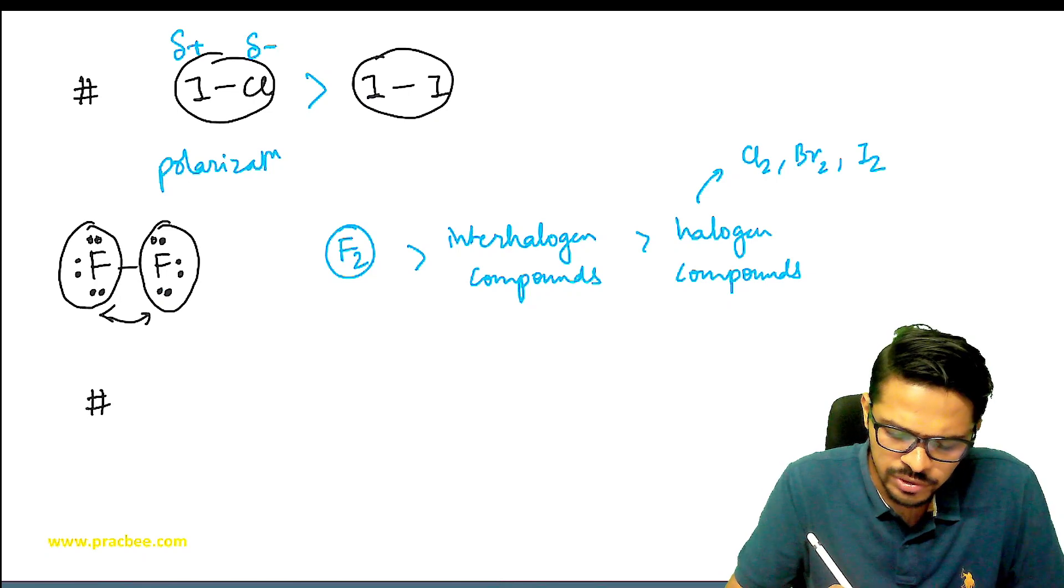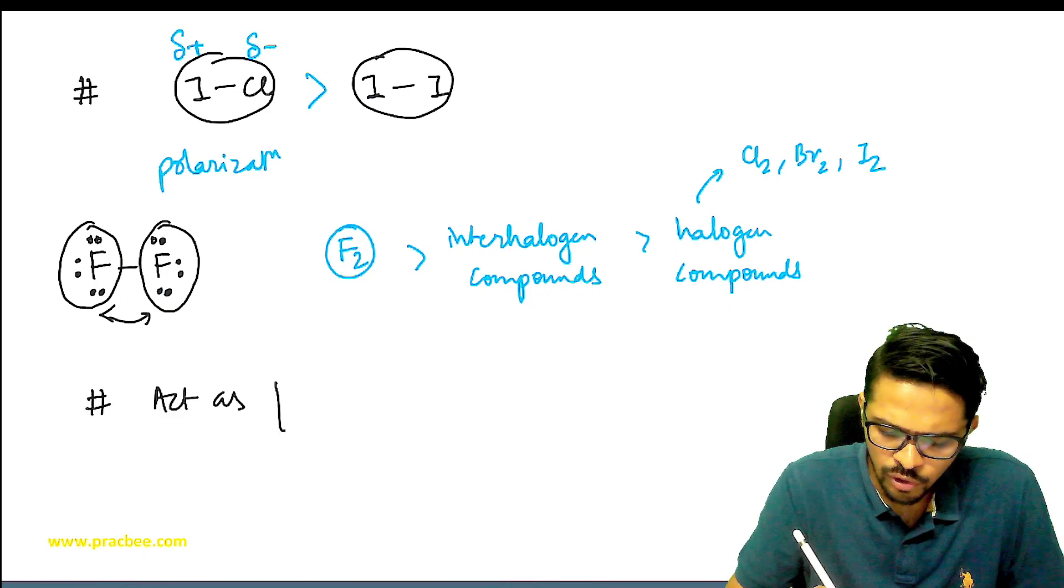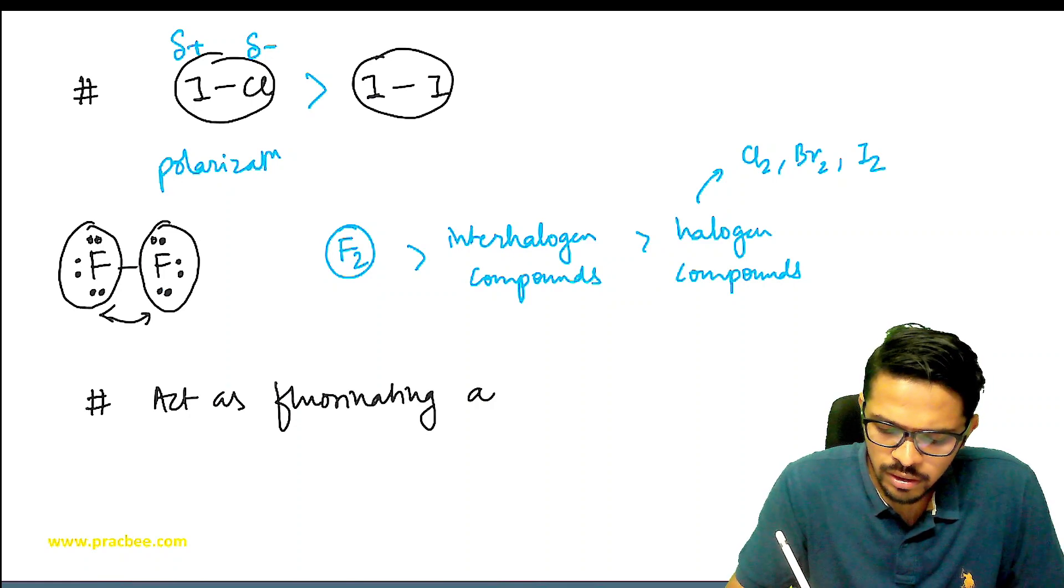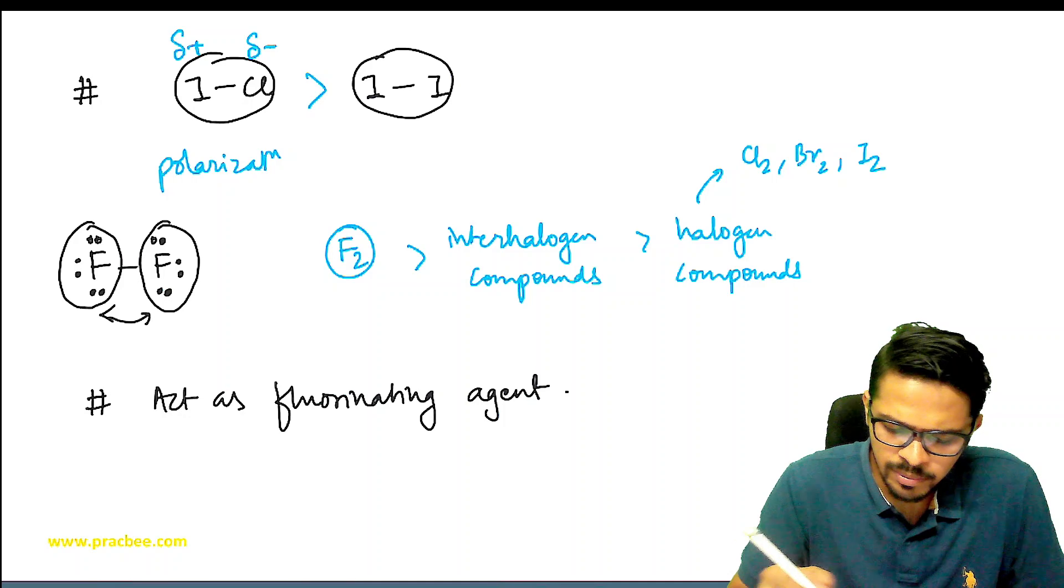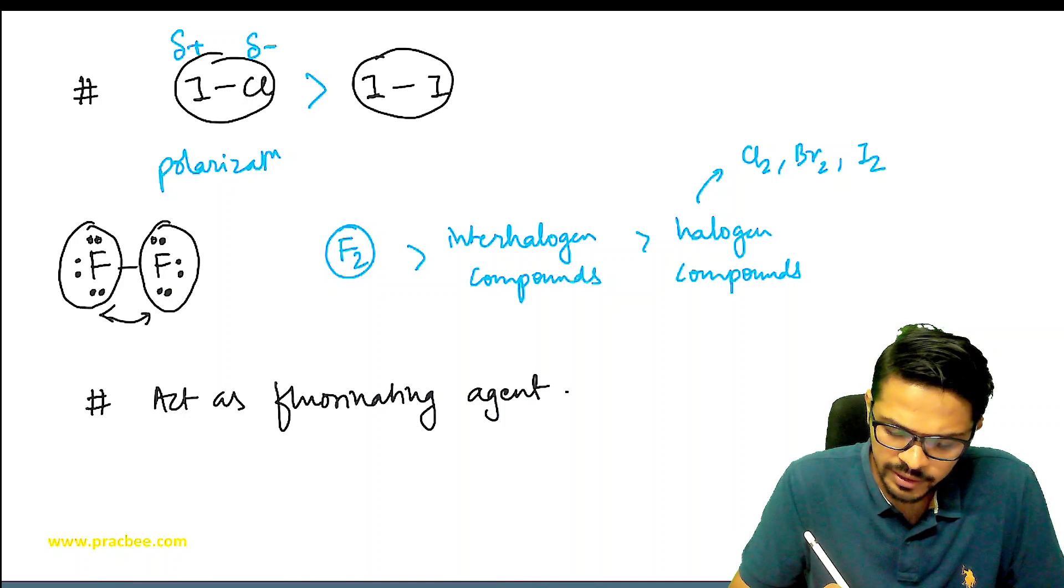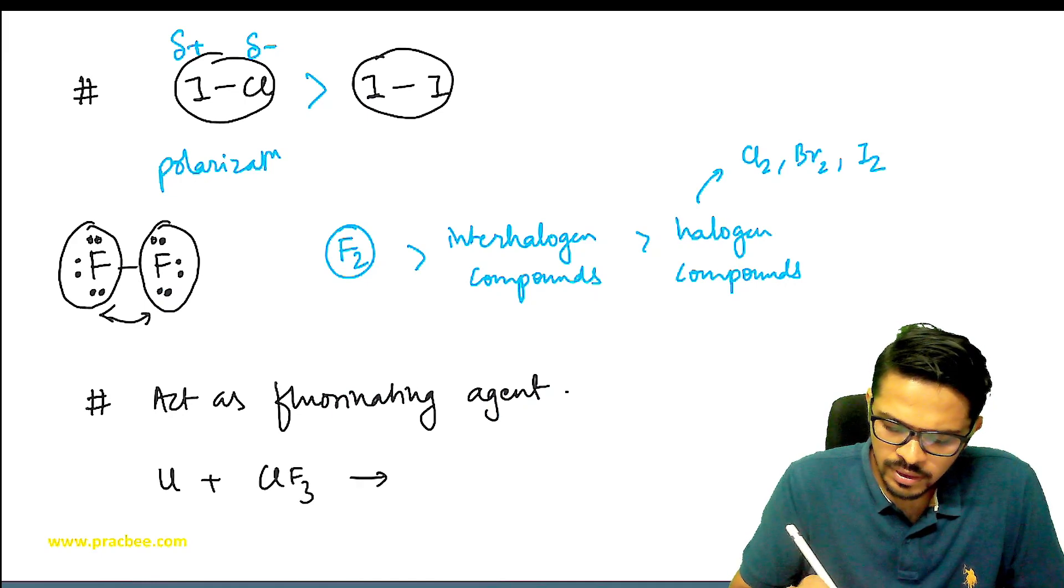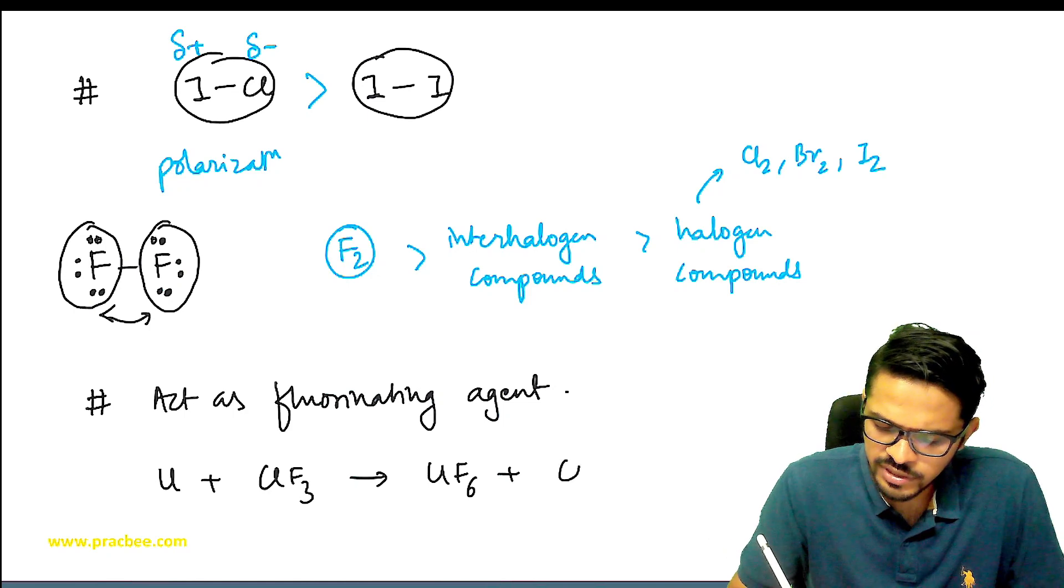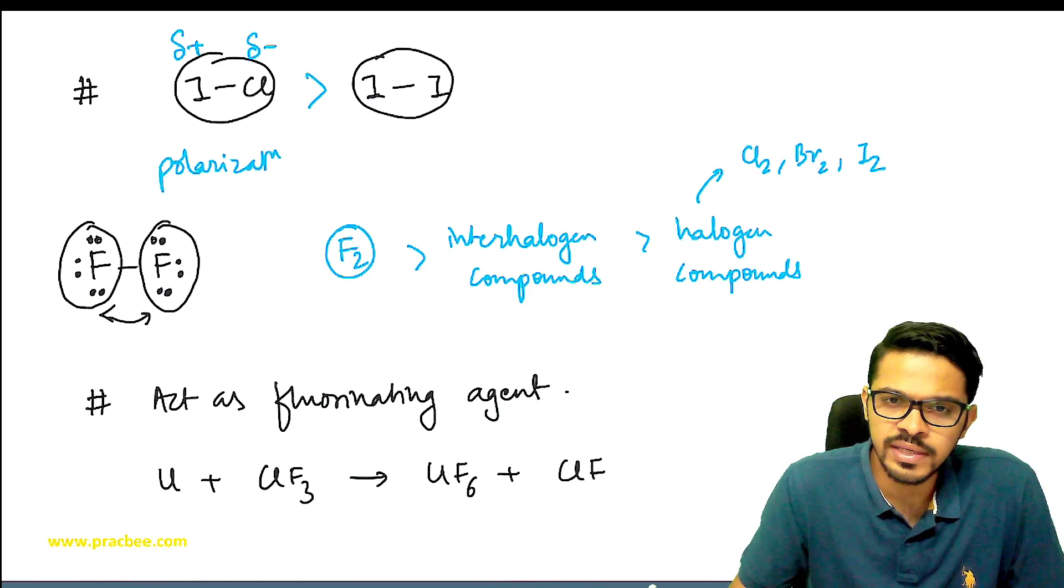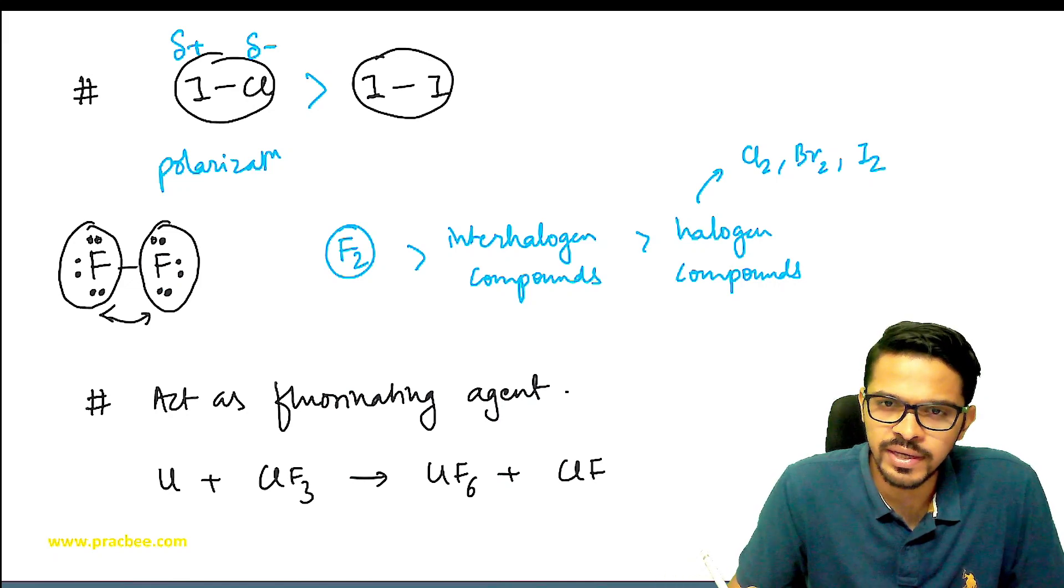One more important property of interhalogen compounds is that they act as fluorinating agents. Fluorinating agent means suppose I take uranium with ClF3, it will fluorinate uranium to UF6 and itself convert to ClF. So interhalogen compounds are also used as fluorinating agents.